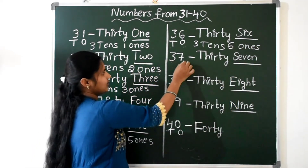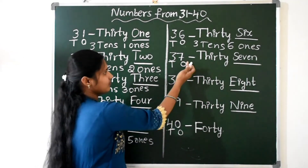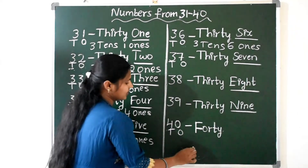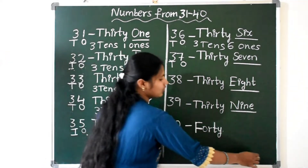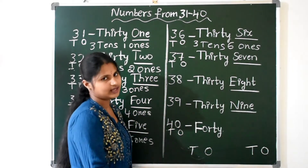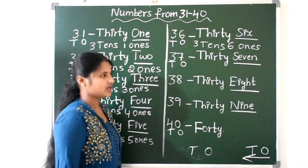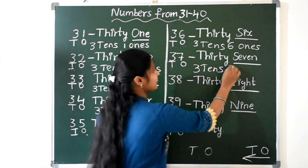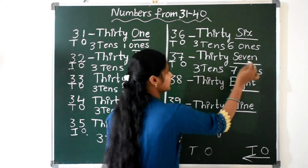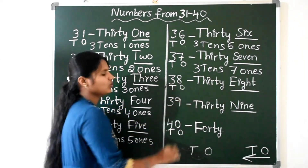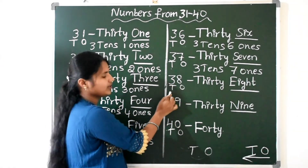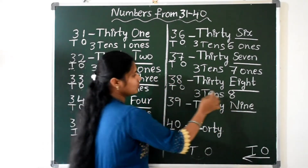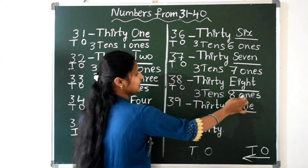Next, 37. Write the place value — ones place and tens place. Place value is always written right to left: first ones place, then tens place. 3 tens and 7 ones. Next, 38: how many ones? 8 ones. And how many tens? 3 tens. So 3 tens and 8 ones makes 38.